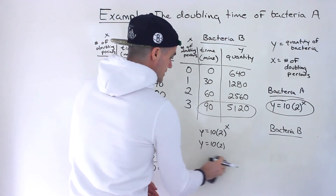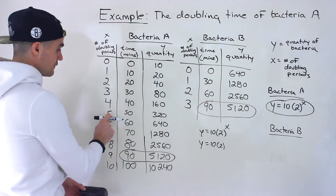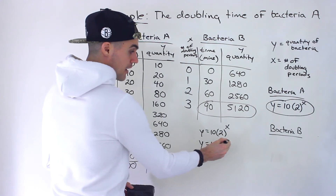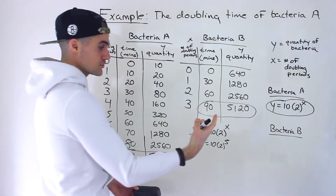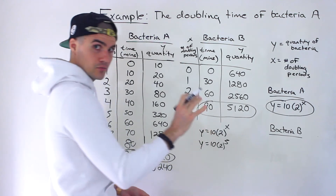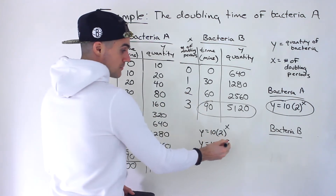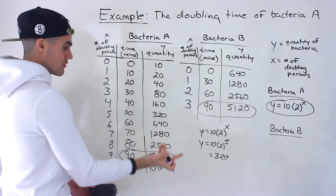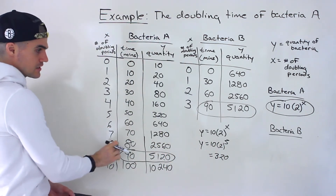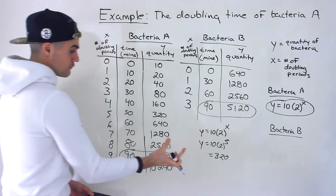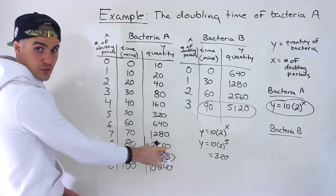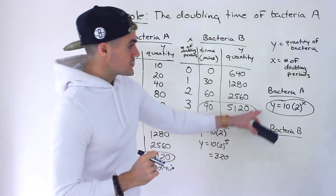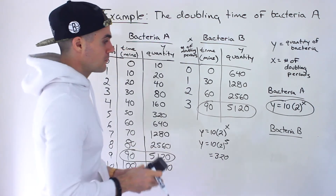Let's test x = 5. We should get 320. Remember BEDMAS — do the exponent first. 2^5 = 32, times 10 gives us 320. You can plug in any of the X values into that formula and it should give the corresponding quantity. That's how you create the equation for bacteria A.